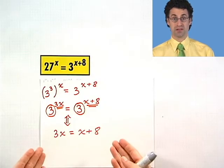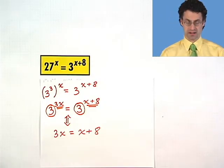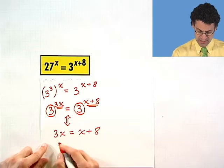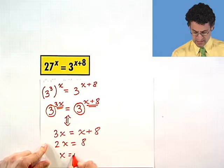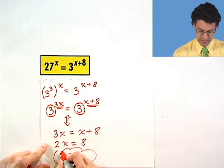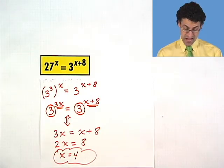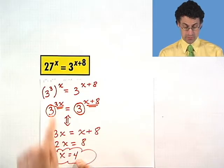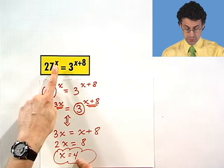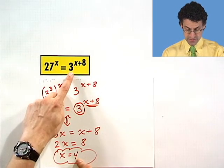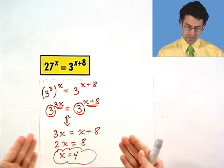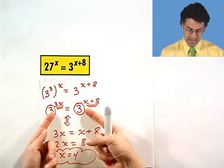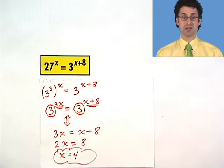And look what I've just done. No more exponents. Now I can just solve this for x. Subtract x from both sides and I get 2x equals 8. Divide both sides by 2 and I see x equals 4. And there's the solution. And you can go back and check if you wanted to. Let x equal 4 and plug back into here and see that 27 to the fourth is the same thing as 3 to the 12th. Let's try another example together.